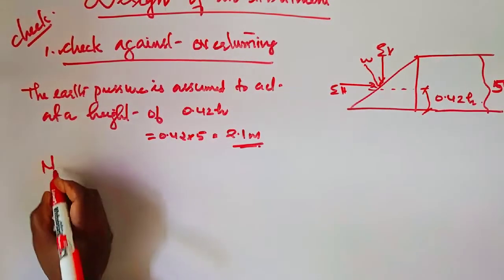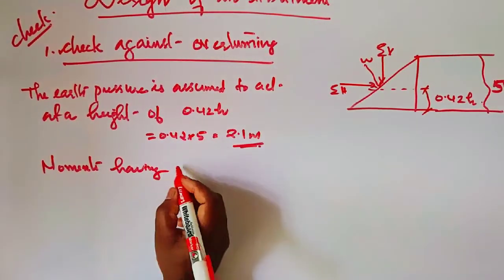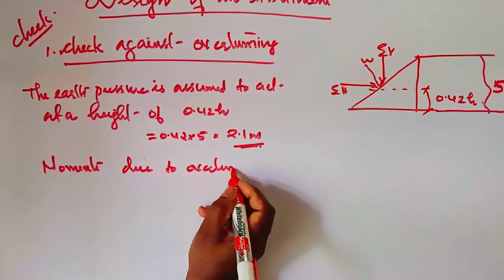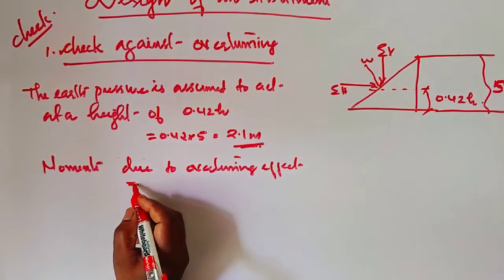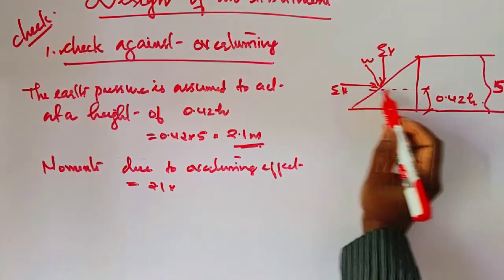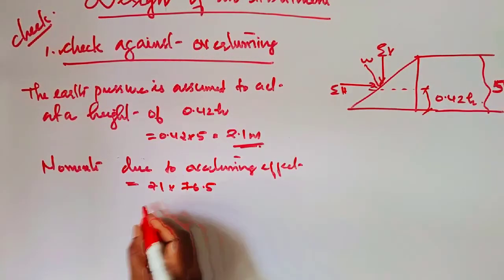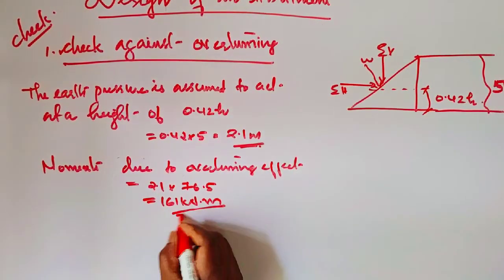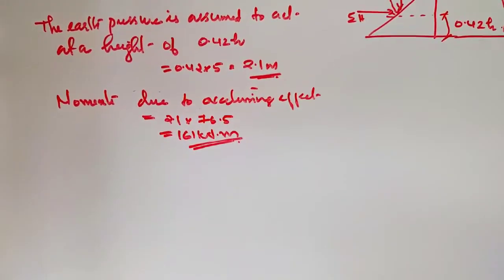The overturning moment is calculated as the horizontal force multiplied by its perpendicular distance. The horizontal component of earth pressure multiplied by its perpendicular distance of 2.1 meters gives: 76.5 × 2.1 = 161 kilonewton·meters. This is the overturning moment.